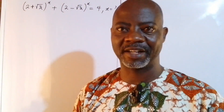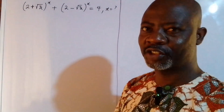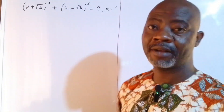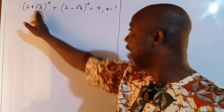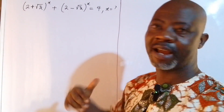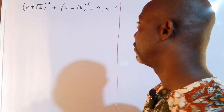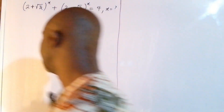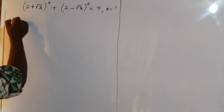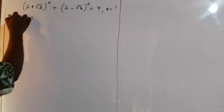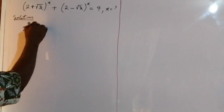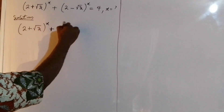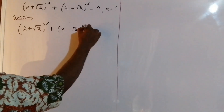Hello guys, welcome back to another video on my channel. We have this exponential equation, but there's something very unusual here — the bases are radicals, and you can see that they are even conjugates. The bases are radicals and they are conjugate. So how do we solve this kind of problem? It's a very nice one to look at, so let's get started. So I have (2 + √3)^x + (2 − √3)^x = 4.